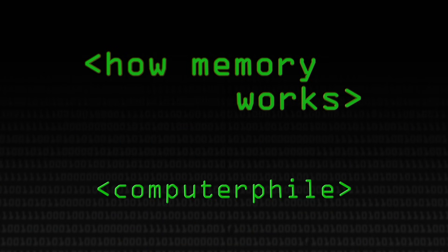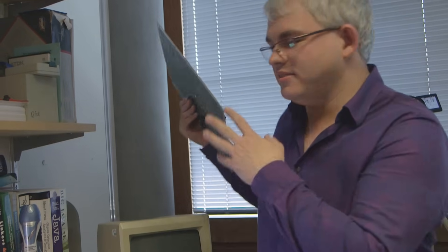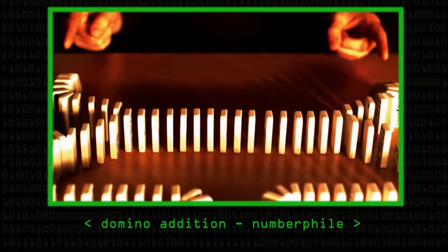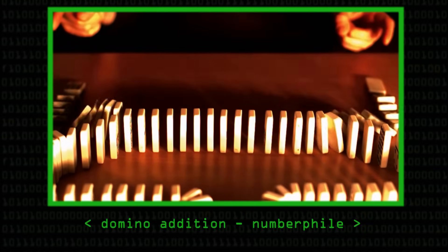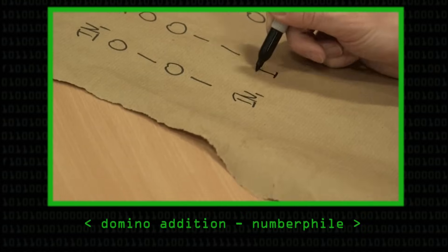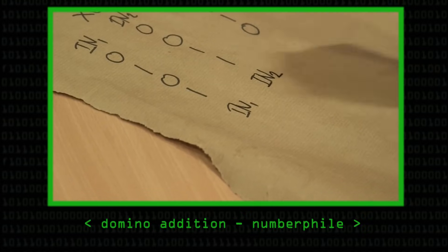So to understand how the memory works, we need to look at some of the basic digital logic circuits we can build using logic gates. Now, over on Numberphile, Matt Parker introduced these using dominoes to create various things. We're going to look at them in terms of the electronic chips.